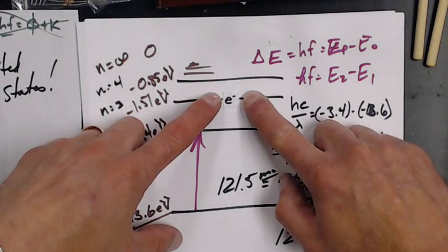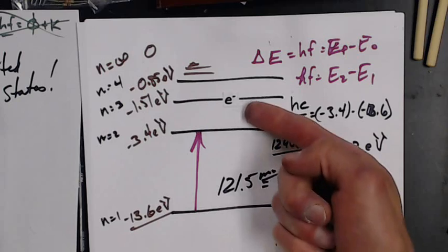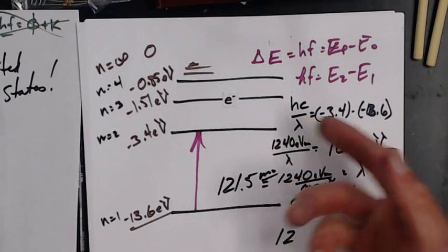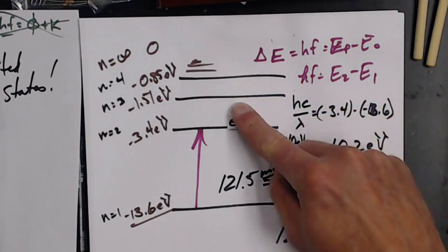So what happens if my electron is in a higher state and it falls back into a lower one? Here's my electron sitting up here. I got put up there a while ago, and so now it's going to fall back down.